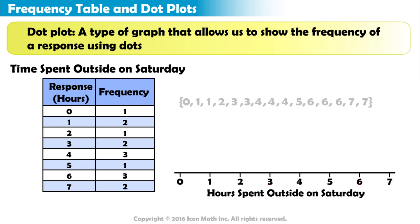Above each value, we will put a dot based on the frequency of that response. Since one person responded zero hours, above zero hours we will put one dot. Two people responded one hour, so we will put two dots above one hour.